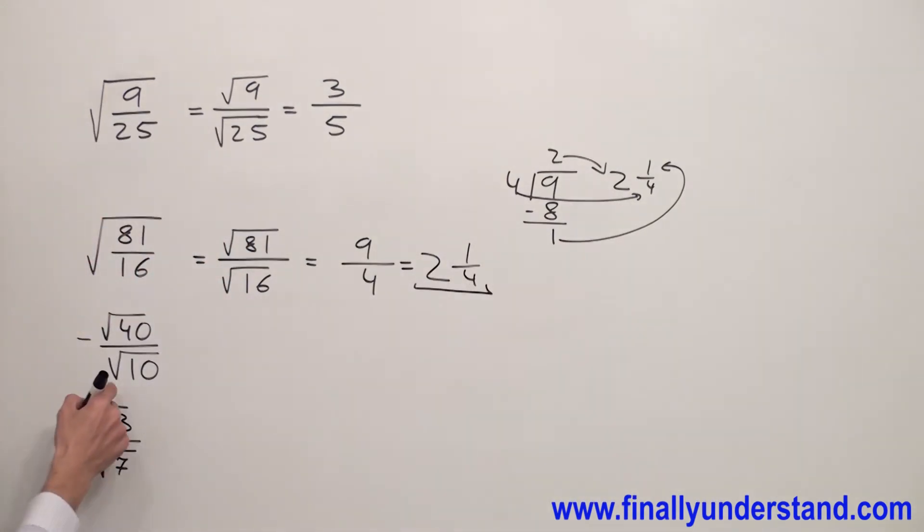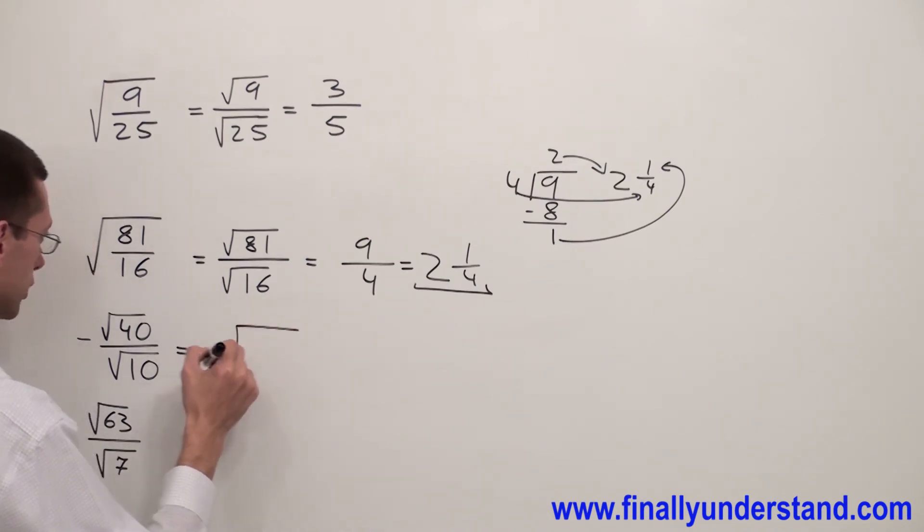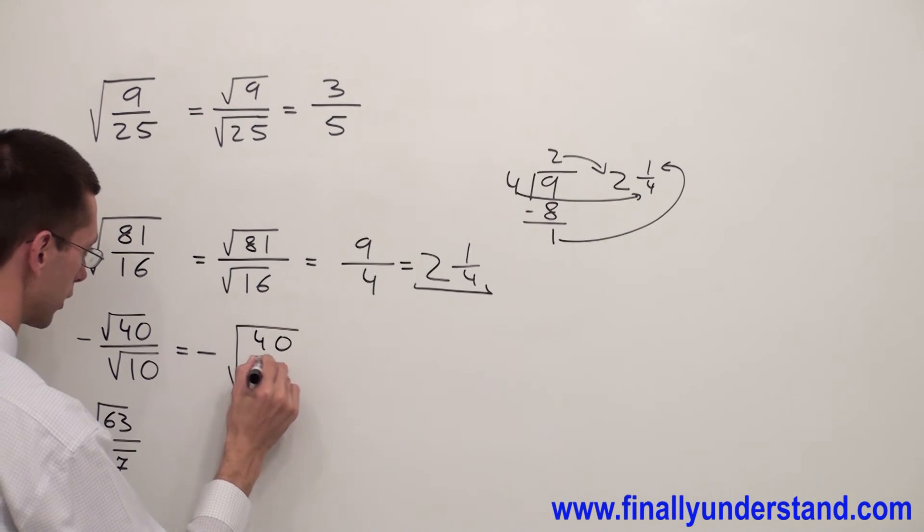Let's take a look at this example. I'm going to have negative. What I'm going to do first? Again, I'm going to use the properties of radicals. If I have square root of 40 over square root of 10, I'm going to write something like this. I'm going to just go backwards from whatever I did over here. I'm going to have 40 over 10.